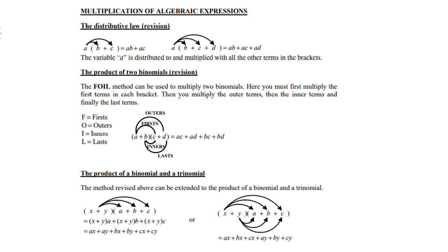Let's first look at the product of two binomials. So if you have two binomials, that means in each bracket there's two terms. The so-called FOIL method can be used to multiply two binomials. Here you must first multiply the first term in each bracket.